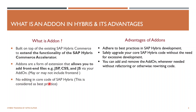An add-on is built on top of the existing SAP Hybris Commerce to extend the functionality of SAP Hybris Commerce Accelerators. Add-ons are a form of extension that allows you to add front-end files — JSP, CSS, and JS — via the add-on. There is no editing in the core code of SAP Hybris. If you have a B2C Accelerator, you don't need to modify the existing core functionality. Instead, you install the add-on, and all changes are made in your add-on and reflected to your core module.